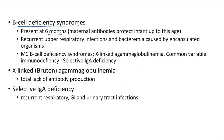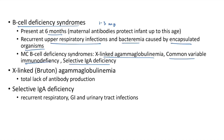B-cell deficiency syndromes present at 6 months (maternal antibodies protect infants up to this age). They present with recurrent upper respiratory tract infections and bacteremia caused by encapsulated organisms. The most common B-cell deficiency syndromes include X-linked agammaglobulinemia (Bruton's), common variable immunodeficiency, and selective IgA deficiency. X-linked agammaglobulinemia has total lack of antibody production; selective IgA deficiency causes recurrent respiratory, gastrointestinal, and urinary tract infections.